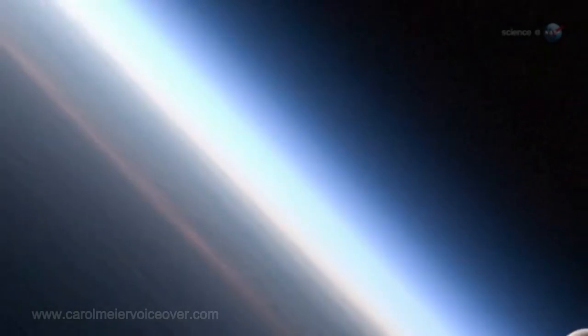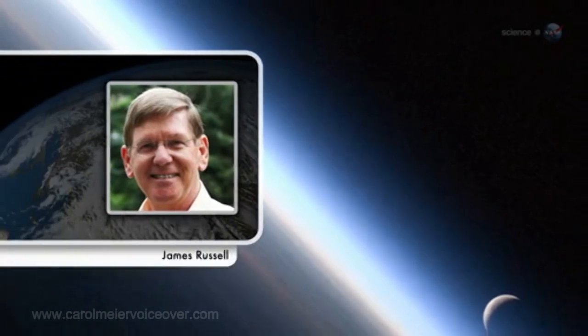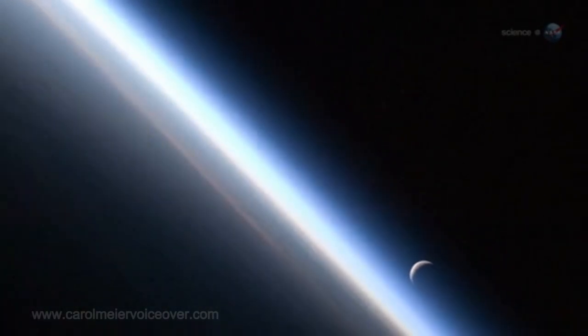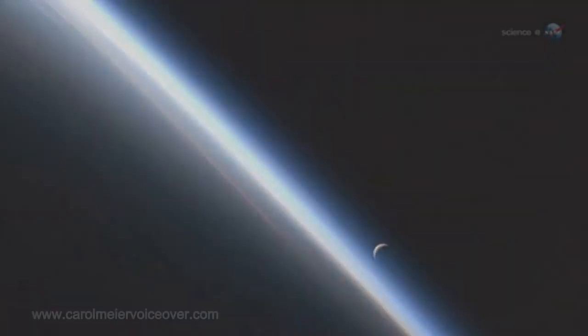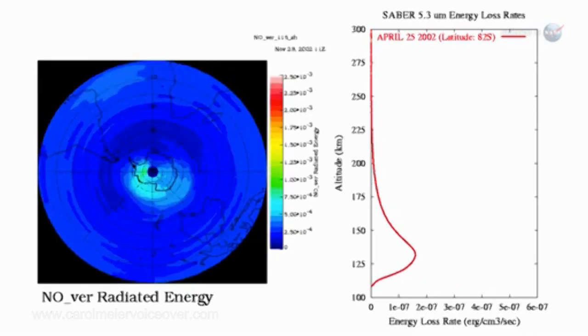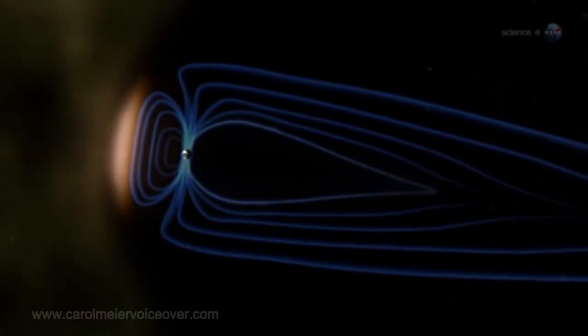Carbon dioxide and nitric oxide are natural thermostats, explains James Russell of Hampton University and SABR's principal investigator. When the upper atmosphere or thermosphere heats up, these molecules try as hard as they can to shed that heat back into space.